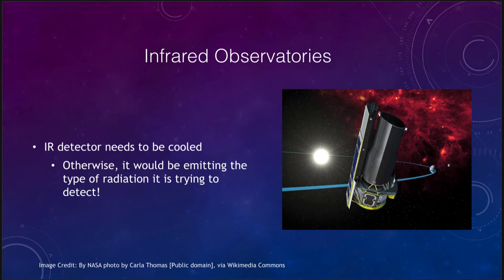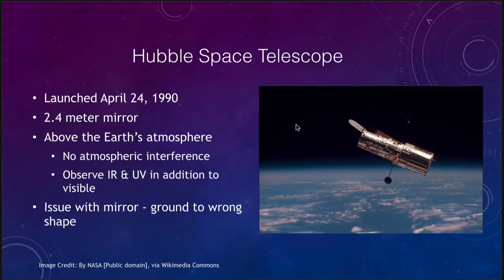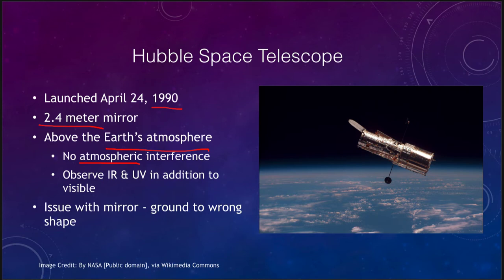One of the most famous space telescopes is the Hubble Space Telescope, which was launched in 1990 and has a 2.4 meter mirror — a very small mirror compared to many other optical telescopes here on Earth. The key is that it is above the atmosphere, so we get no atmospheric interference. That means we can observe with higher resolution and no atmospheric blurring from the twinkling of stars. It also can observe infrared and ultraviolet, so it's not constrained to just visible light. A regular mirror will also reflect infrared and ultraviolet, allowing us to study a wider range of the electromagnetic spectrum.